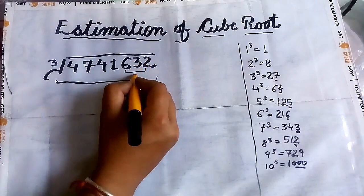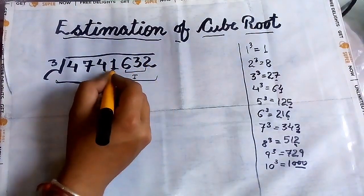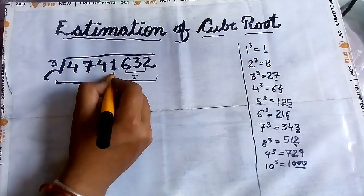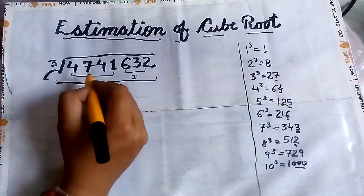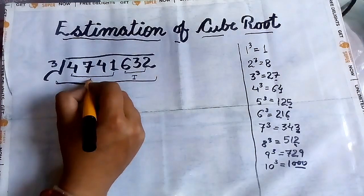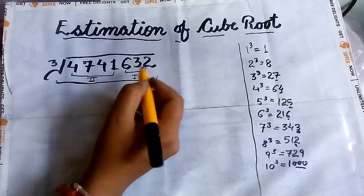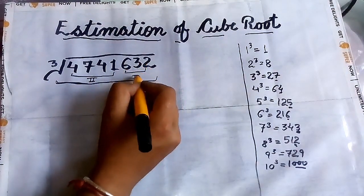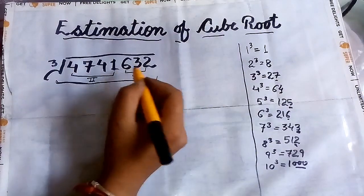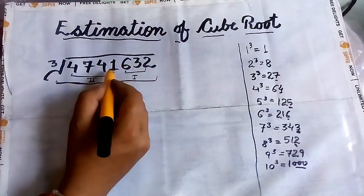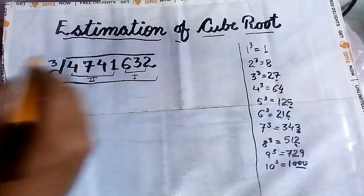The first step is to divide your number into groups. The first group contains the last 3 digits, and the remaining digits will be in the second group.